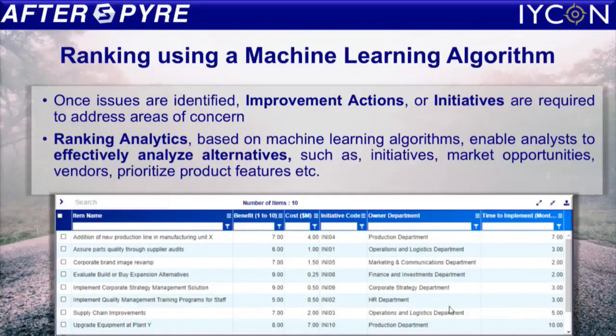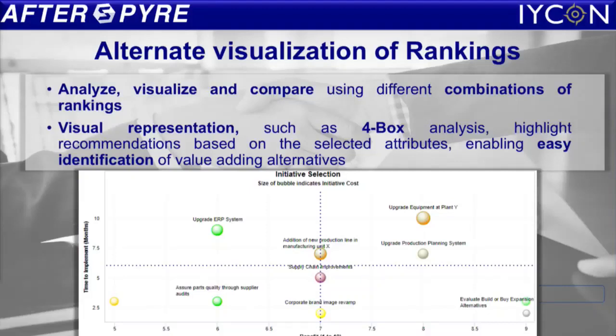Looking at the next step, we would do ranking with the machine learning algorithm to identify improvement actions and to select things to improve — initiatives, market opportunities, vendors. We can visualize this using what we call a four-box functionality. In this case, one of the key issues is to evaluate a build or buy for an expansion alternative.